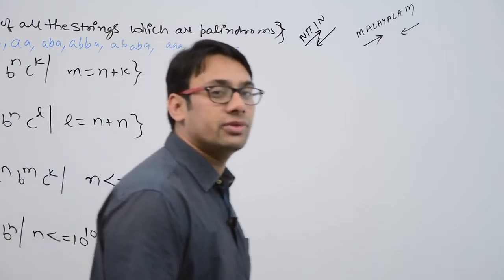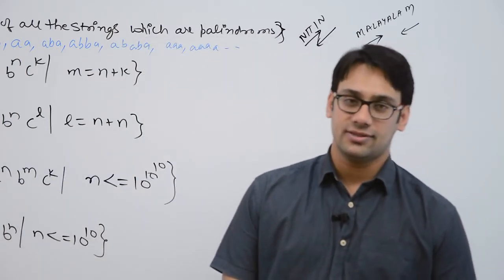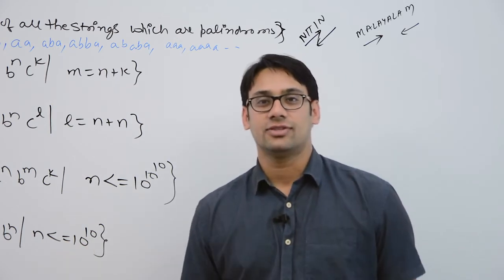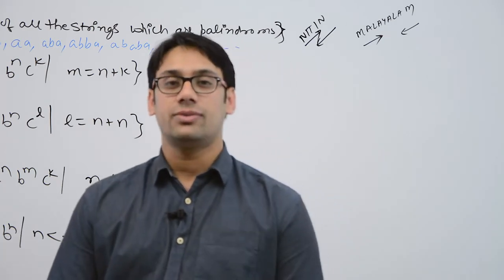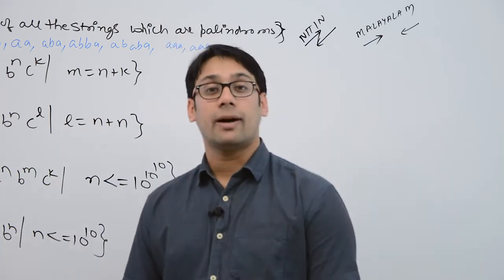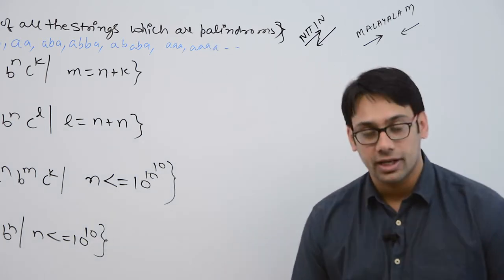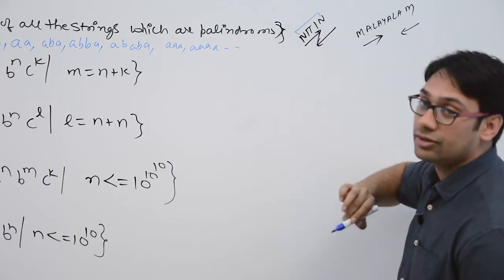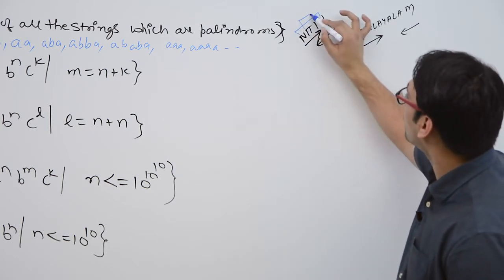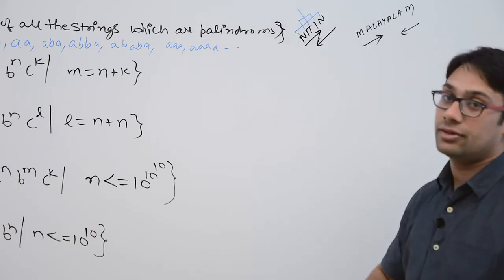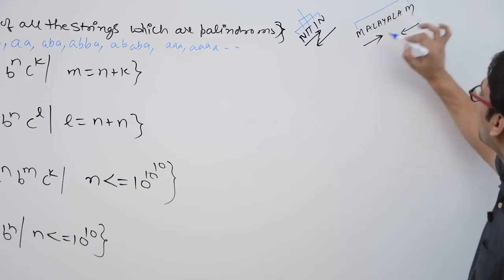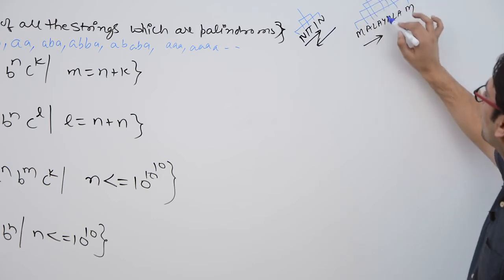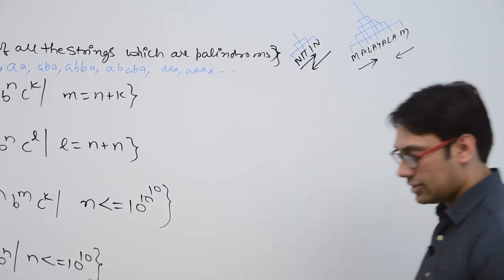So when I say the strings are palindromes, that means we can have any combinations of A's and B's such that even if you read the string from either direction, you should be able to read the same string. For that, you need to compare them. When I say comparison, if the first character is N, then the last should be N; if the second is I, the second-last should be I. Here M and M, A and A, L and L, A and A, and then Y in the middle.